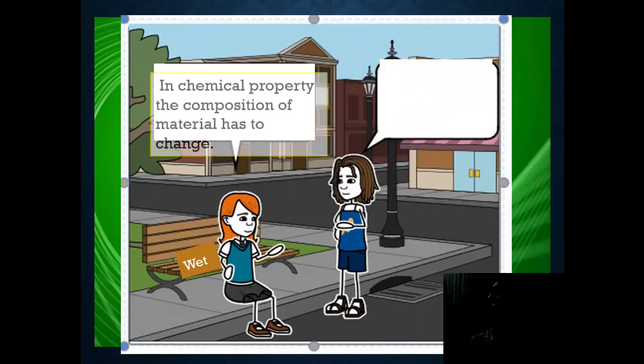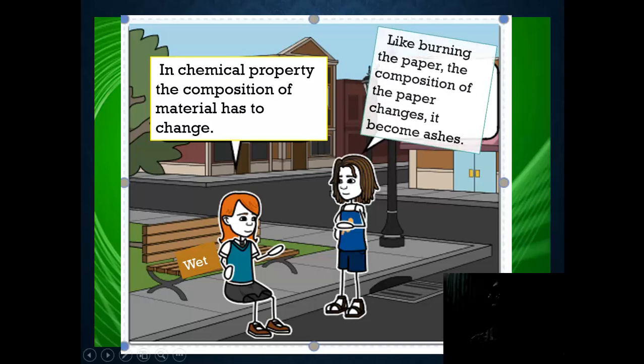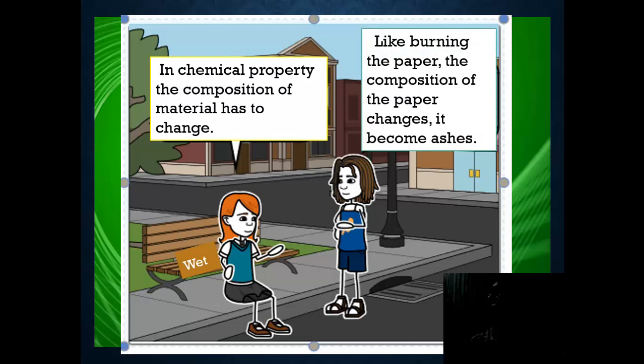In chemical property, the composition of material has to change. Is it like burning the paper? The composition of the paper changes. It becomes ashes.